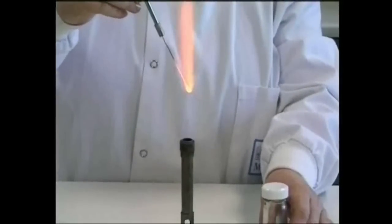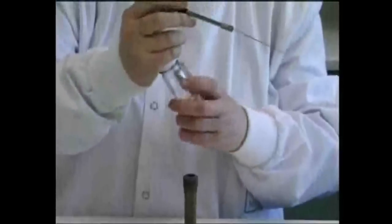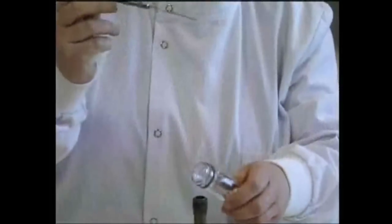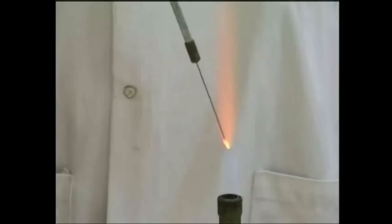Flaming is simply heating equipment in a Bunsen flame. Loops, wires, spreaders, and pipettes are all flamed in order to sterilize them, but a different technique is used for each.